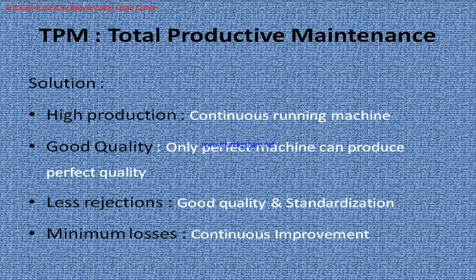The third point is less rejections. Rejection can be minimized by producing good quality, and standardization should be there. Suppose if we are having finished goods kept on a trolley that is not up to standard, the finished goods get scratched and quality goes down — a quality defect occurs. So we need standardization. To minimize losses, we need continuous improvement. If we are having any kind of loss, we need to analyze why the loss occurred and make some standard so that the problem doesn't occur a second time.